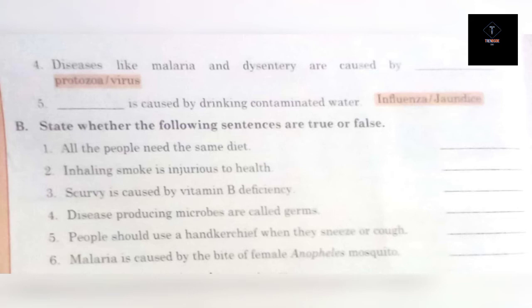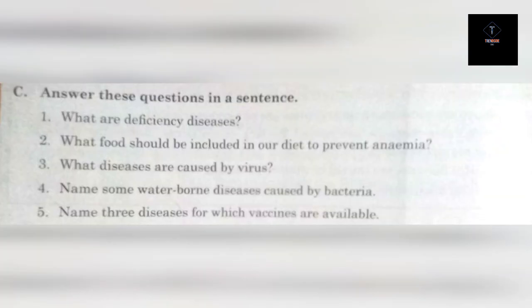In Section B, you have some statements and you have to choose whether they are correct or false. For example, the first one is: 'All people need the same diet.' You need to decide true or false for the six statements given.